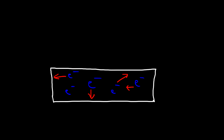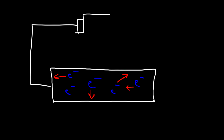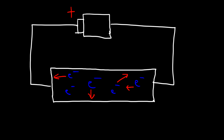The only way to get the electrons to move in one direction is to create an electric field, and the way you can do that is to place a voltage across a metal. So let's connect this metal to a battery — this could be a Duracell or Energizer battery. This is the positive terminal and this is the negative terminal. As a result, an electric field will be created, so this side of the metal crystal will be positive and this side will be negative.